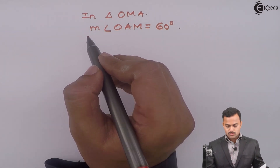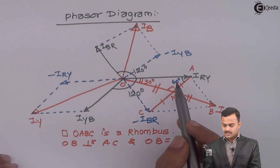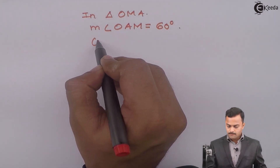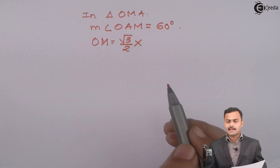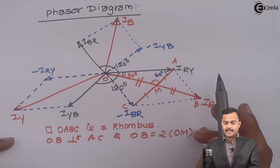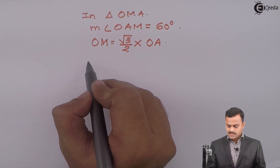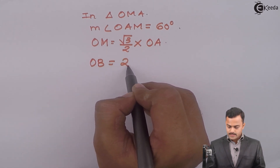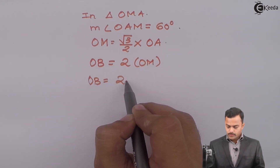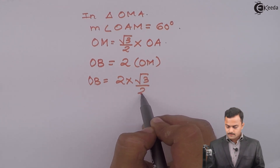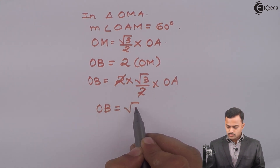In a 30-60-90 triangle, the side opposite to 60 degrees is (√3/2) times the hypotenuse. The side opposite to 60 degrees is OM, so OM = (√3/2) × OA, where OA is the diagonal of the triangle. We also have the relationship OB = 2 × OM. Substituting: OB = 2 × (√3/2) × OA, and the 2's cancel, giving OB = √3 × OA.